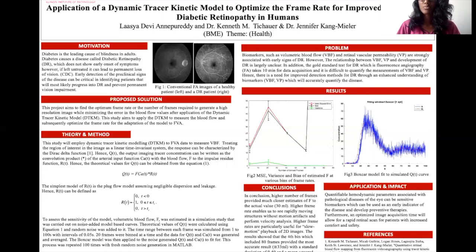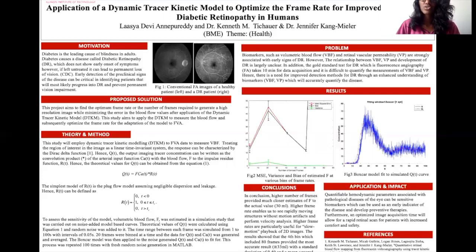As you can see, the higher number of bins provide much closer estimates to the actual value of the volumetric blood flow. The actual value of volumetric blood flow is 30 ml, and we saw that at 80 frames binned together, the estimate was closest to the actual value. The closest estimate was 33 ml with a standard deviation of 0.49 and mean squared error of 11.75. This is consistent with theoretical assumptions that higher frame rates provide better quality images, and not only that, but this higher frame rate enables us to see rapidly moving structures without motion artifacts and also allows velocity analysis at the capillary level where diabetic retinopathy is extremely relevant.